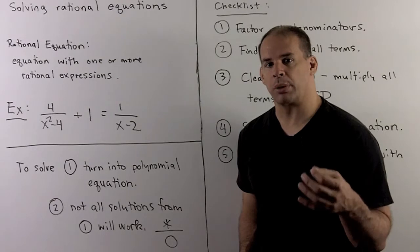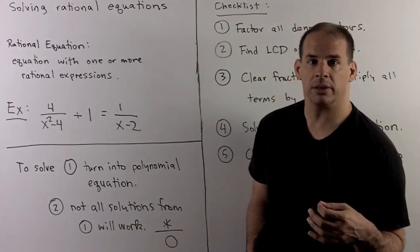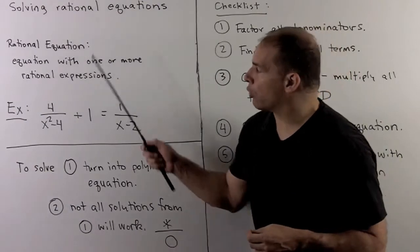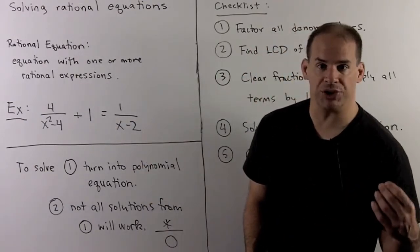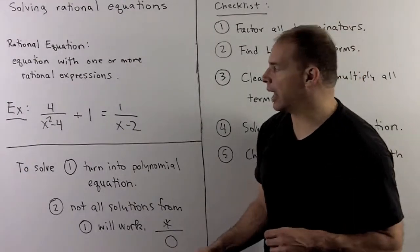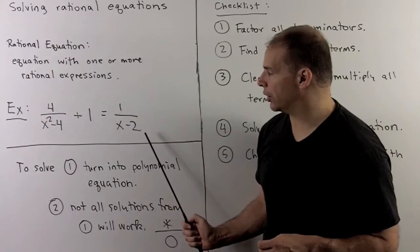Now that we can manipulate rational expressions, we move on to solving rational equations. Here, a rational equation is an equation with one or more rational expressions in it. So we're looking at something like 4 over x squared minus 4 plus 1 equal to 1 over x minus 2.